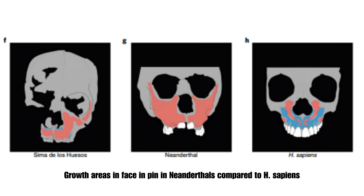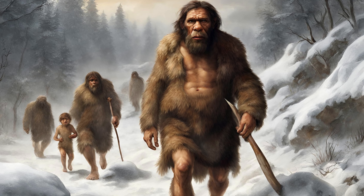Neanderthals exhibit distinctive facial features, including continuous upper jawbone growth resulting in a protruding face during adolescence. These traits raise questions about adaptation to extreme cold or genetic drift in small populations.